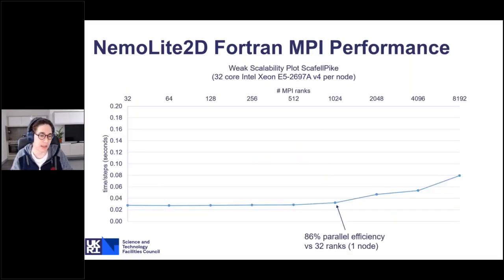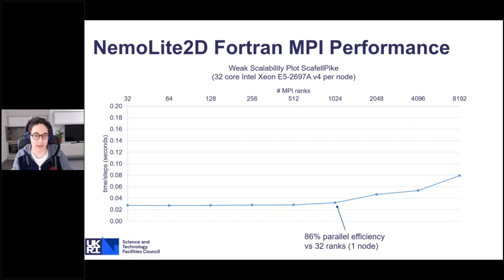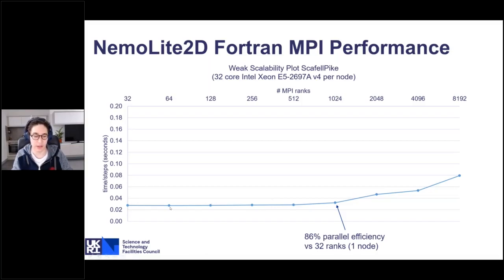When the inline transformation is applied, at least in the serial, OpenMP, and MPI cases, we get performance as good as the manual implementation. The second plot shows that MPI has reasonable scalability. I'm plotting weak scalability, keeping the workload of a single core constant, so we expect time-per-step to be flat. This holds roughly until 1,000 MPI ranks, where we get 86% parallel efficiency — which I would say is very good.